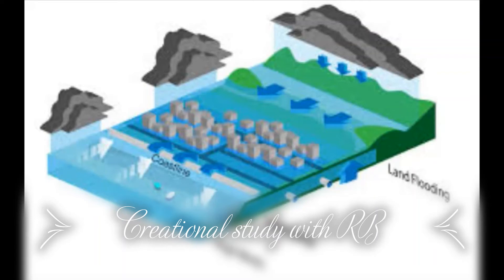When the moist air from the sea meets the cold air over land, the air cools down. The cool air cannot hold moisture, so condensation occurs and rain is received. This is a slight rain and does not last too long. We call this coastal rainfall.